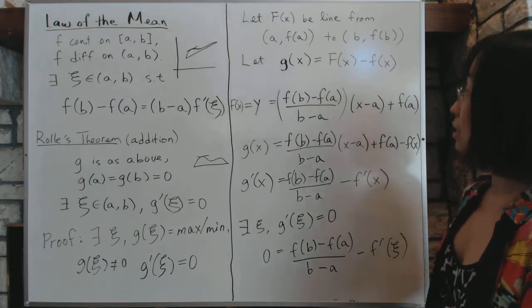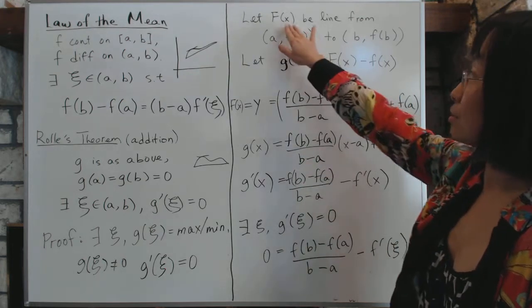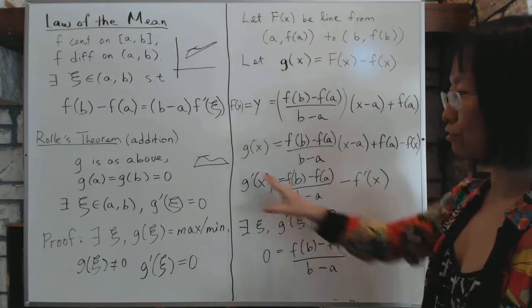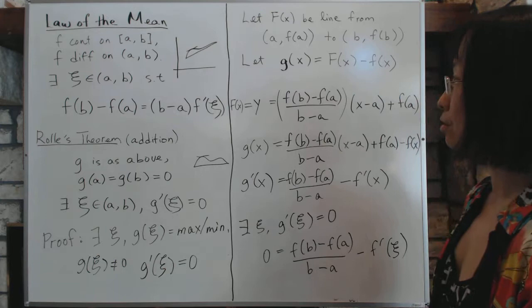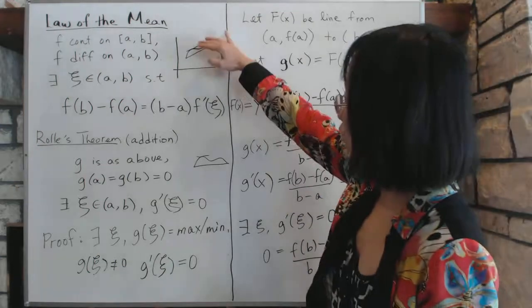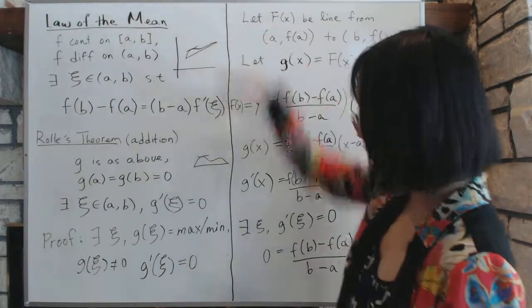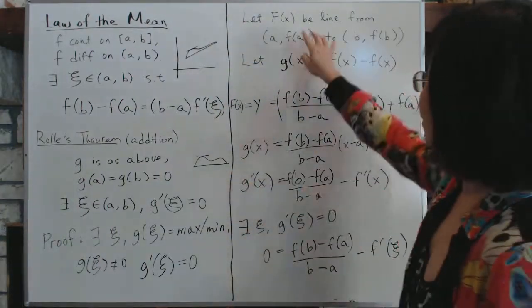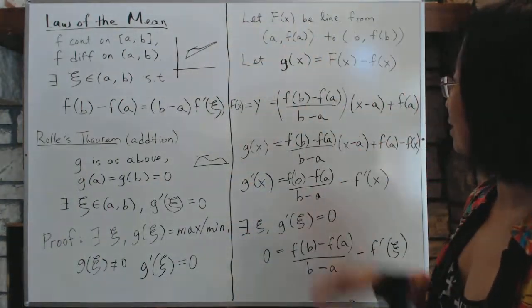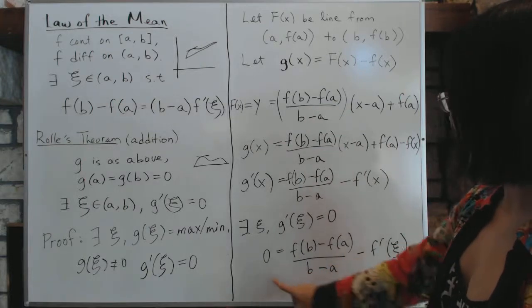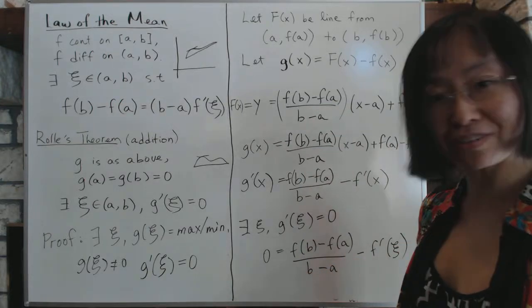So you can see that the law of mean is proved by a simple trick that you subtract it to force the endpoints to be zero. Essentially, what you're doing is dropping everything down. Drop this thing down here, everything gets dumped down by the value of the straight line, designed to drop it. And then the whole thing will come up very nicely.